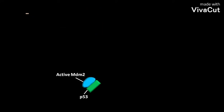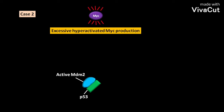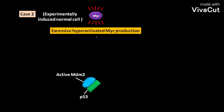Let us consider case 2, in which excessive hyperactivated MYC production is occurring in an experimentally induced normal cell. This excessive level of hyperactivated MYC production often leads to the production and activation of ARF. ARF is a cell cycle inhibitor protein.